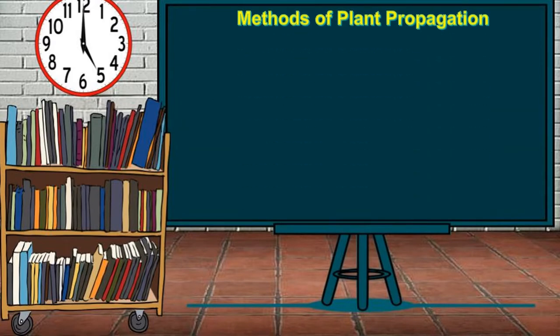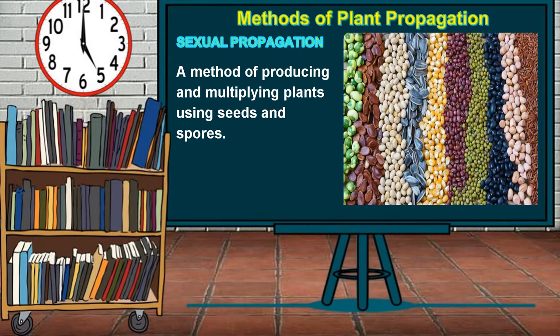Methods of plant propagation. There are two methods of plant propagation. The first one is sexual propagation. It is a method of reproducing and multiplying plants using seeds and spores. This is the most common and economical method of propagating plants. Some fruit trees propagated with seeds are santol, tamarind, guava, mango, and jackfruit. However, some plants like fruit-bearing trees produced from seeds may not have the same characteristics as the mother plants.